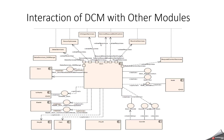Looking at the interaction of DCM with other modules, DCM is tightly coupled with DEM, NVM, BSWM, CSM, and COMEM. The PDU router will reroute messages to DCM. COMEM manages diagnostic sessions and communication modes — full COM, no COM, and silent COM. DEM is responsible for DCM reading reported DTCs. DCM uses NVM for storing persistent data, and uses CSM and KM for security purposes — CSM for cryptographic algorithms and KM for handling certificates.